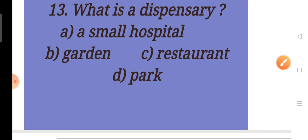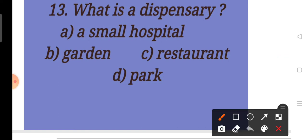Now next question, thirteenth number. What is a dispensary? A. Small hospital, B. Garden, C. Restaurant, D. Park. Children, answer will be A. A small hospital.